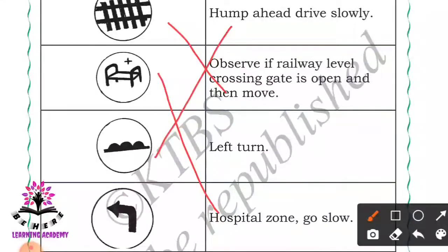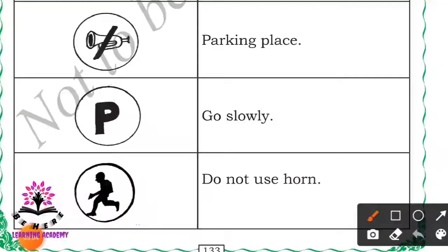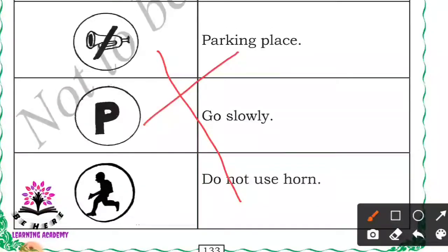The next sign is left turn. Then: do not use horn - match it to do not use horn. Next: parking place - match it to parking place. And the last one: go slowly - match it to go slowly.